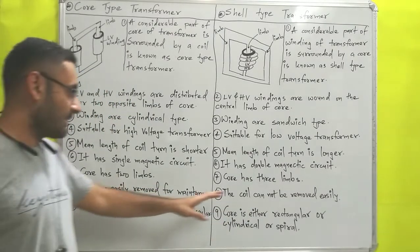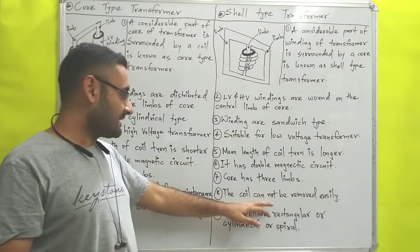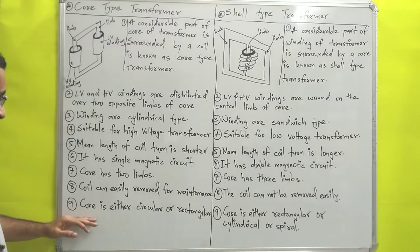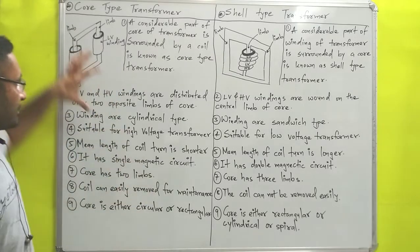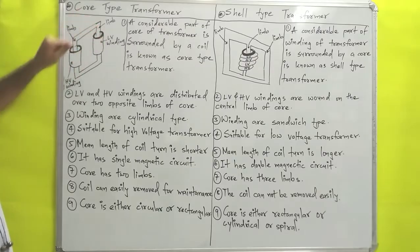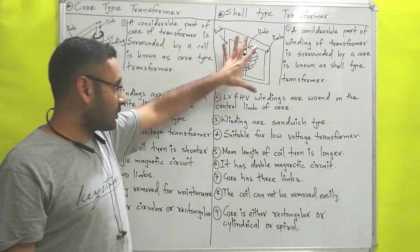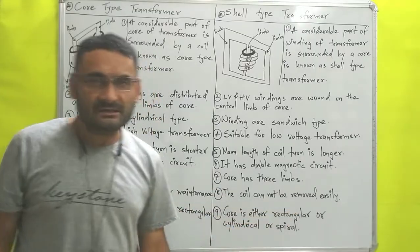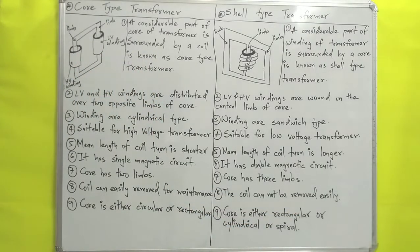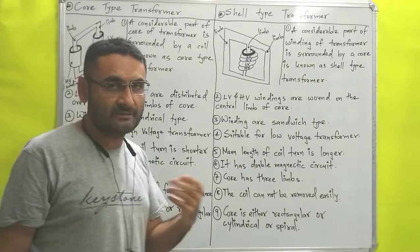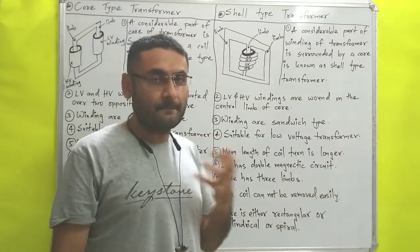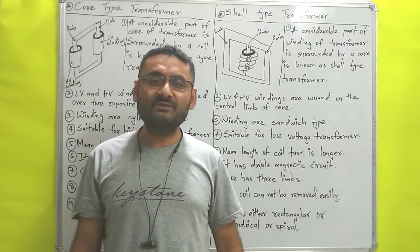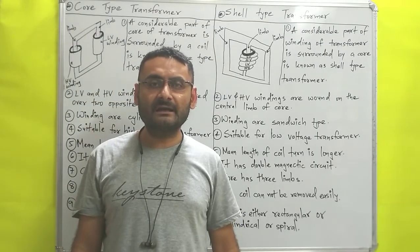The next difference is that in the core type, the coil can be easily removed for maintenance. In the shell type, since the coil is sandwiched, the coil cannot be removed easily. Lastly, the core in the core type is either circular or rectangular, while the core in the shell type can be rectangular, cylindrical, or spiral. That is all about the comparison of core type and shell type transformers. Thank you very much.